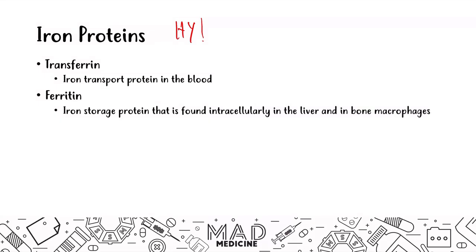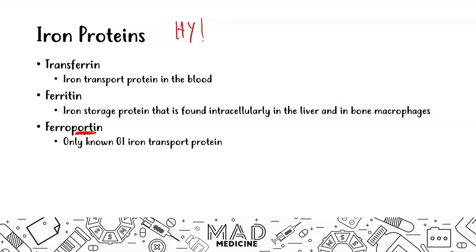Ferroportin is the only known GI transport protein. A helpful memory hook: ferroportin is a 'port' for iron to enter our body. It is a protein, not a channel — that's just a simplification to help remember it.